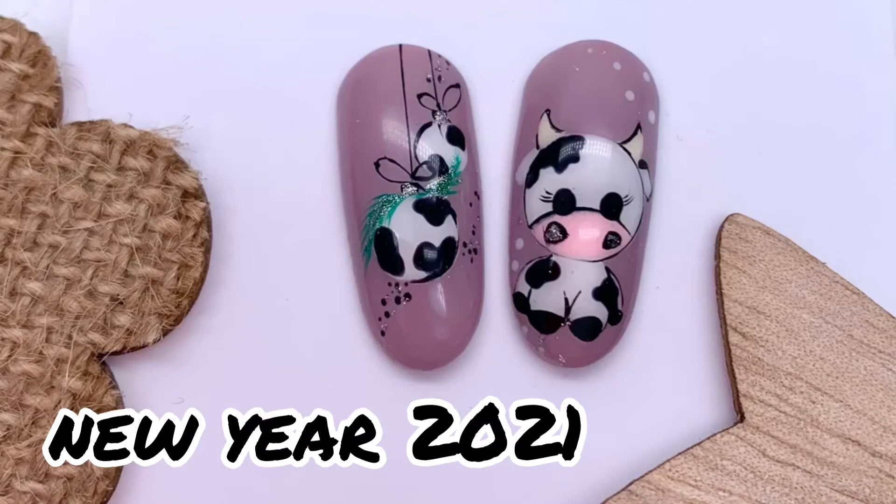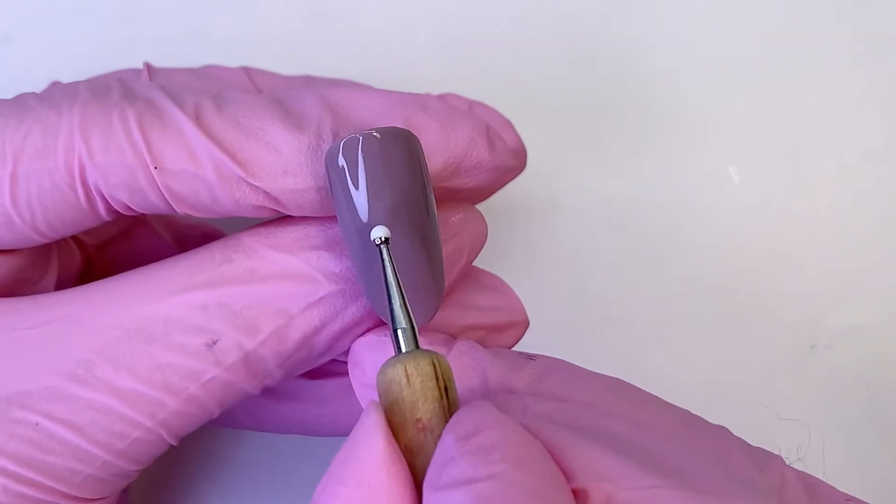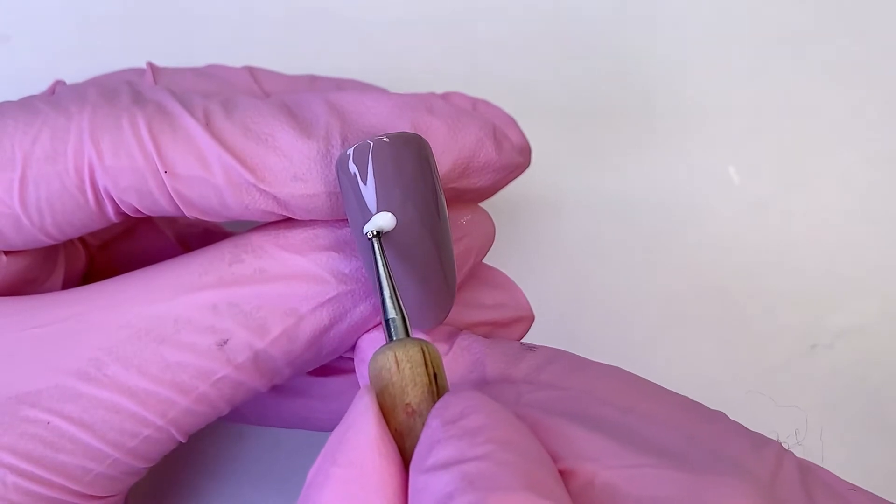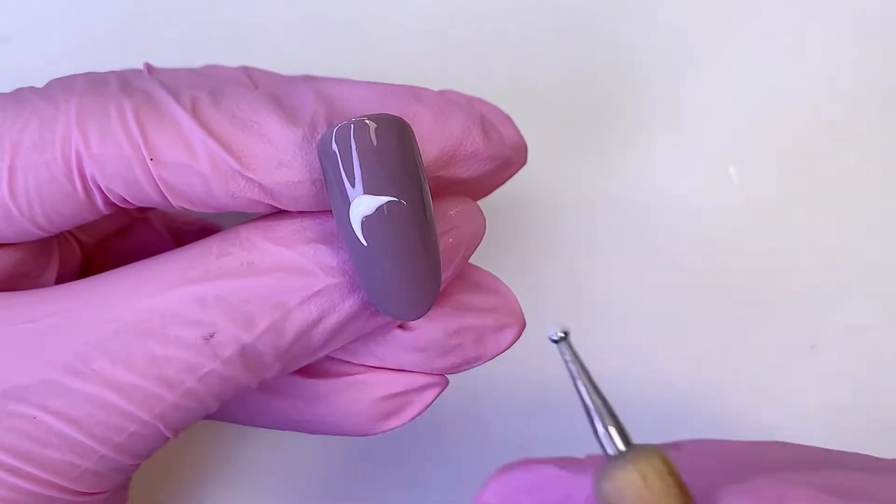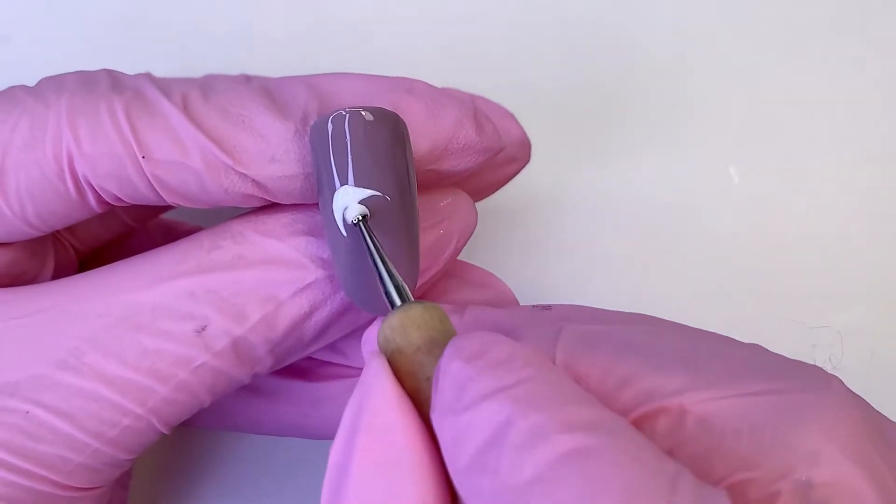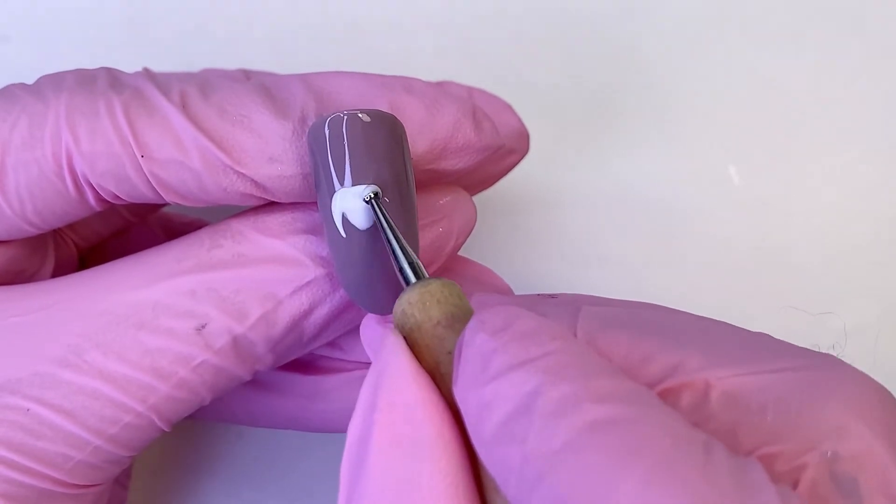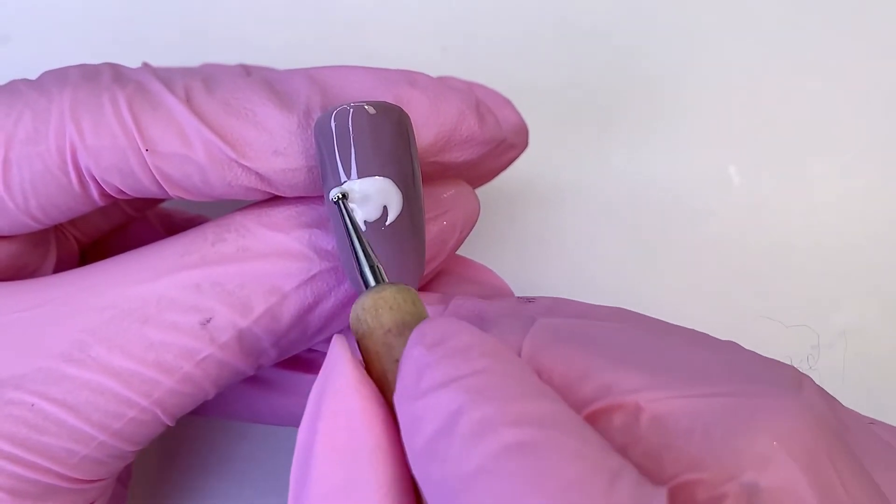Hi my darling, on the eve of the new year let's draw a bull. To do this, draw a circle using dots and white gel polish. It will be a bull's head.